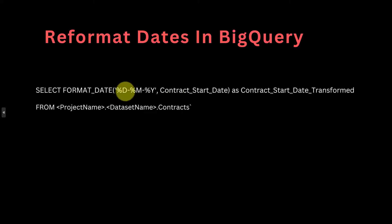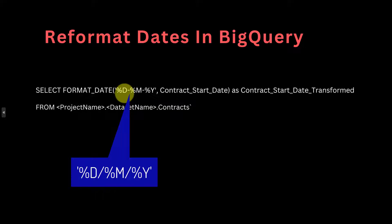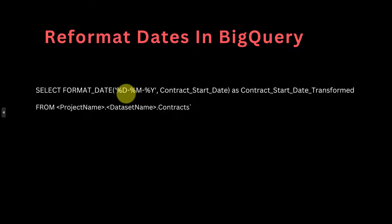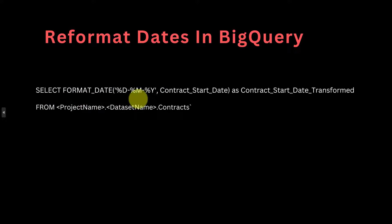Note that in this SELECT statement we have a hyphen between the day, month, and year. You could also put a forward slash if that's the format you want — day forward slash month forward slash year — and it's going to work exactly the same way. This gives us a lot of flexibility on how we can format the date. The next line of code is the FROM clause, where you select from your project name, dataset name, and the table within which this column belongs.